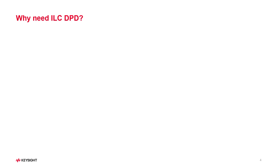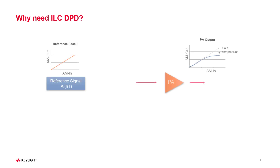As we discussed in the last video, Power Amplifier is a nonlinear device. When a signal goes through the Power Amplifier, the gain cannot be sustained, especially in the higher power region. As we can see in the upper right area of the graph, the line goes down compared to the straight line. This is called gain compression.